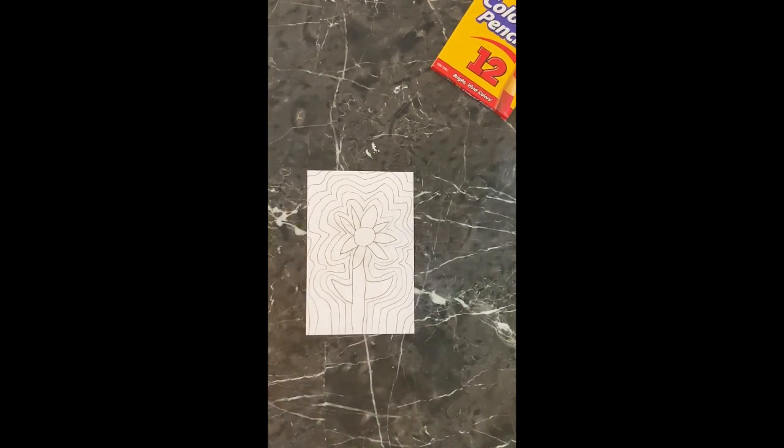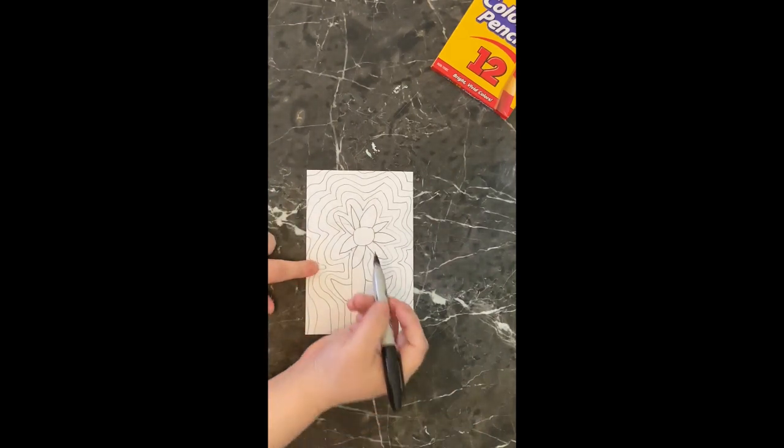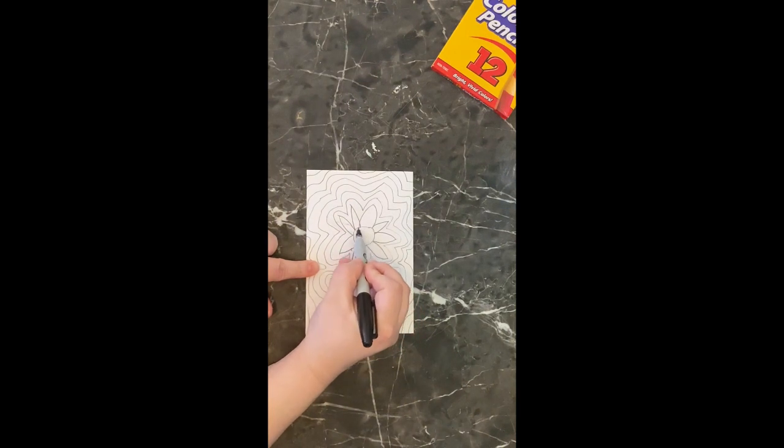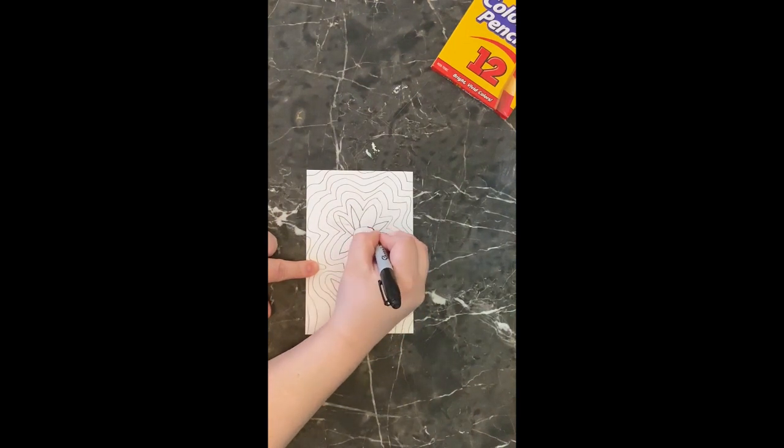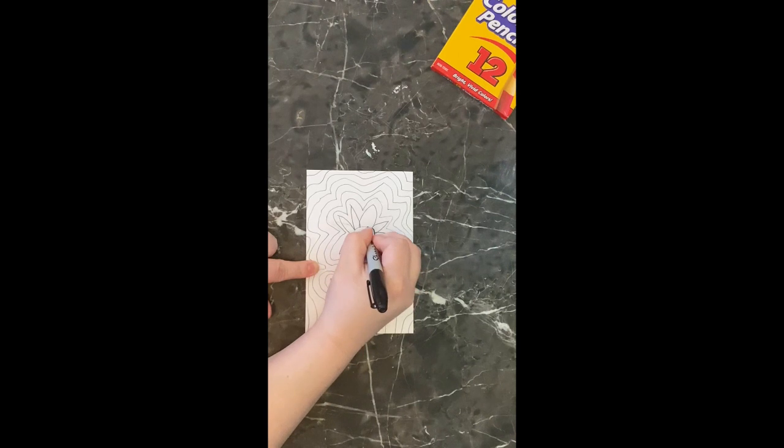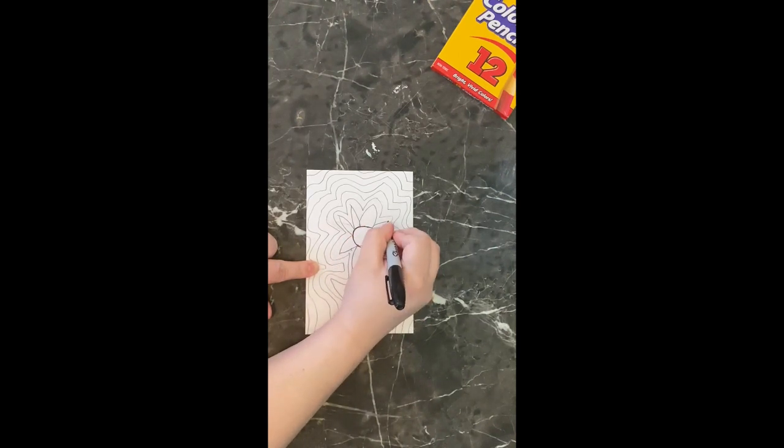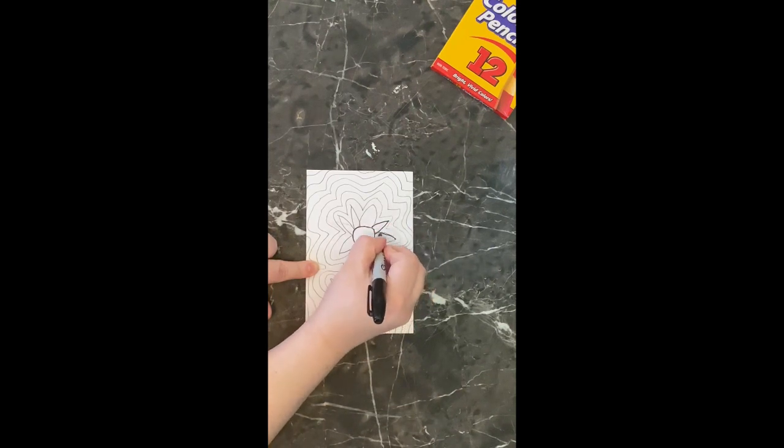Okay, so we finished this up. What you're going to do next is with your pen or your dark marker, I'm just going to use this Sharpie pen I had laying around, you're going to trace over all of your lines. We're just going to start, doesn't matter where you start, you're just going to trace over all the lines you drew.